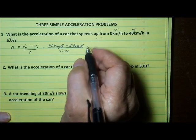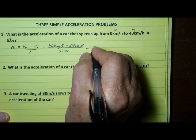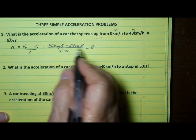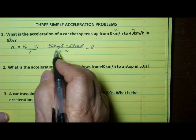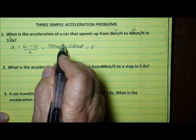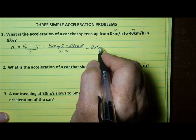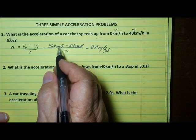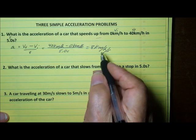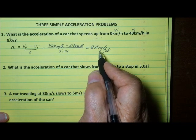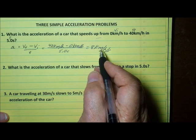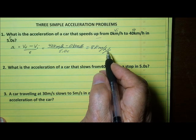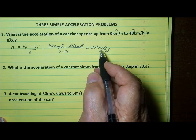When we work this out, 40 divided by 5 is 8. But we can't stop there — we have to include the unit of measurement in the answer, and the unit is derived from the math process. The unit is kilometers per hour per second. What this tells you is that the velocity is increasing by 8 kilometers per hour every second while the car is speeding up.